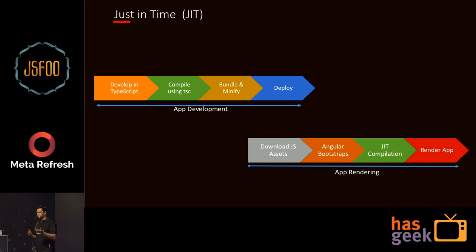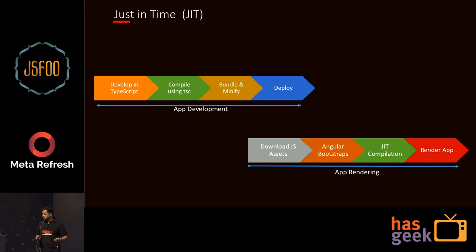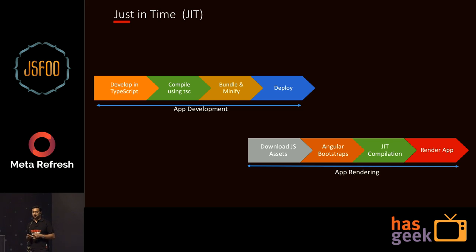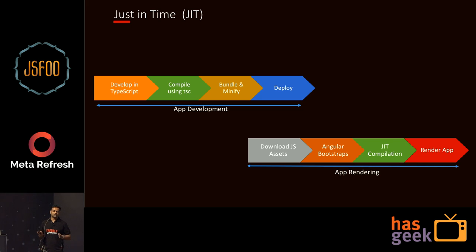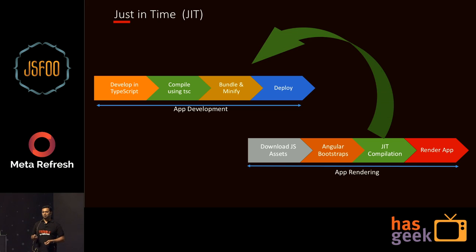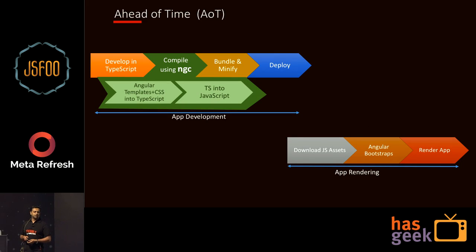The way JIT works: you write code in TypeScript, compile it using the TypeScript compiler, bundle it, minify it, and deploy it to the server. The end user downloads the bundles, Angular bootstraps, the compiler runs, and then the app renders. Most performance improvement techniques have tried to reduce time in any of these steps. The Angular team thought of doing something different — why not move the entire compiling from render time to development time? That's how AOT came into picture.